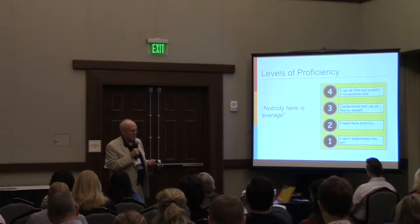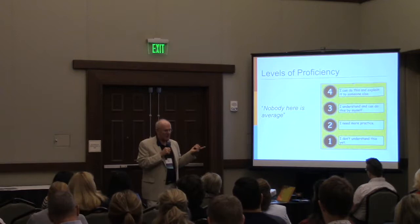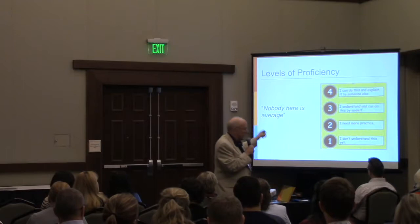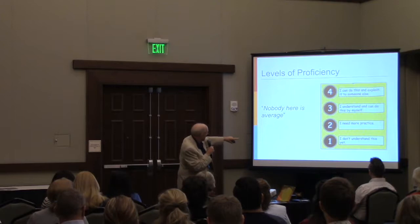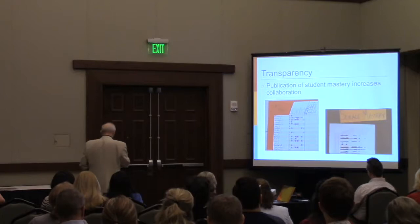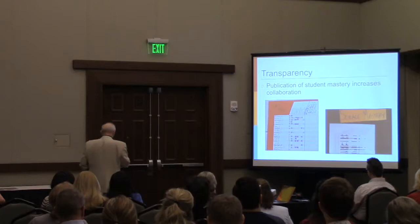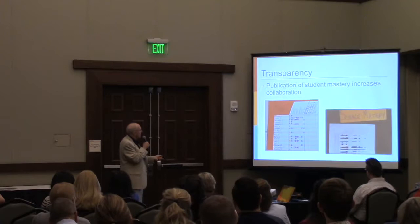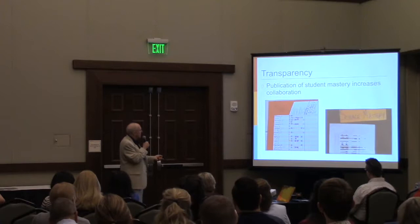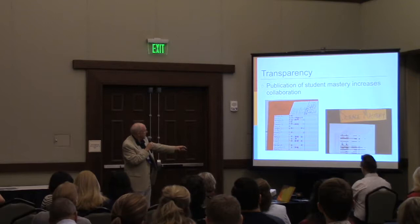One classroom had a four-level system: Level 1 — I don't understand this yet; Level 2 — I need more practice; Level 3 — I understand, can do it by myself; Level 4 — I not only can do this, but I can explain it to someone else. That made mastery concrete. This type of chart was always on the wall in every classroom, always with four levels though the language might differ. In one classroom — 70% 10- or 11-year-old boys who were all into race cars — the proficiency levels were assigned to cars, from a basic car at the bottom to a Ferrari at the top, with car stickers for achievement levels.